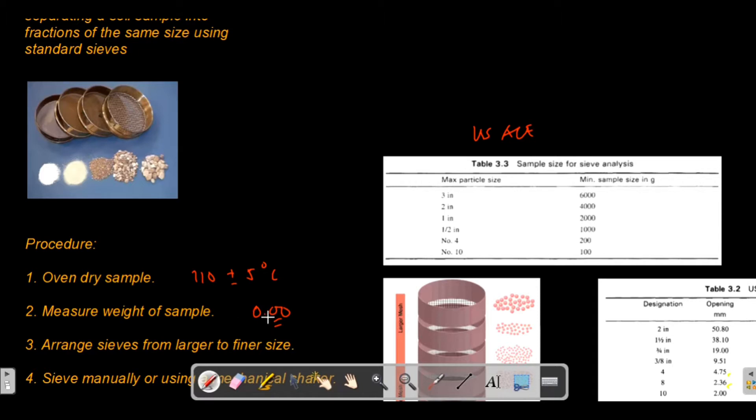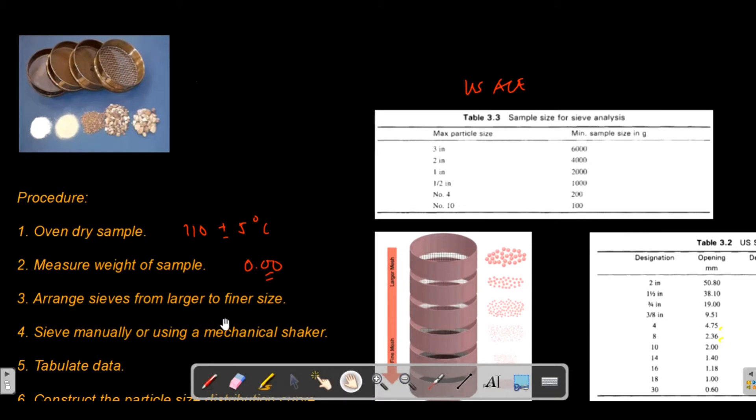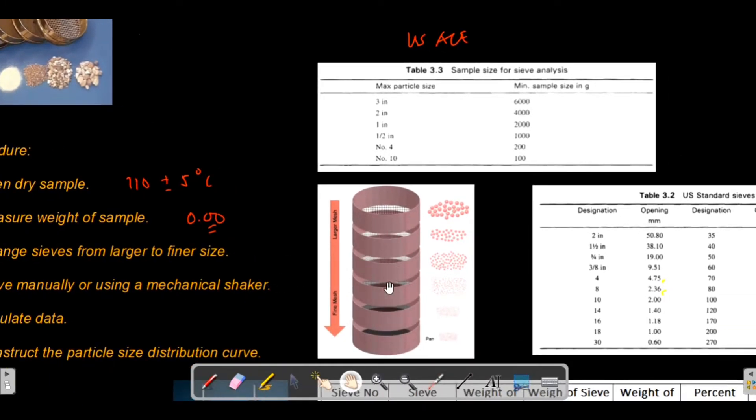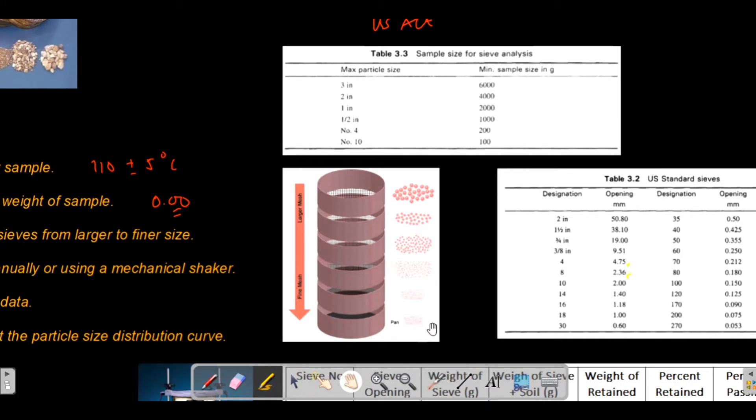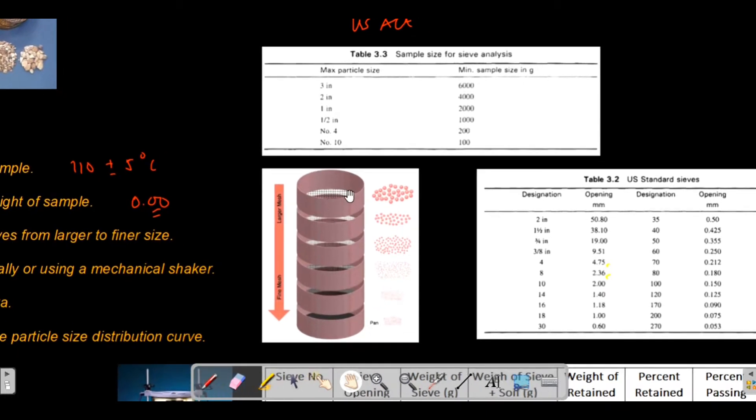After weighing your samples, you have to arrange the sieves from larger to finer size. By the way, you also have to weigh your individual sieves to get the weight of each sieve before doing the sieving process. Arrange the sieves from larger to finer size. This is the usual arrangement of sieves - the larger mesh or larger holes are at the top, and as you go down, you'll have finer and finer hole diameters.